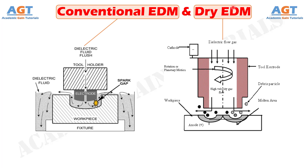Electric discharge machining is one type of non-traditional machining process where workpiece material is removed by melting and vaporizing with the assistance of high-intensity sparks generated between two electrodes. Fluids such as kerosene, deionized water, and petroleum-based oils are conventionally used as dielectric fluid for electric discharge machining.